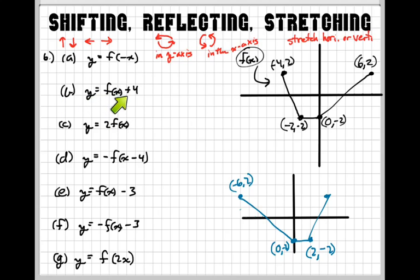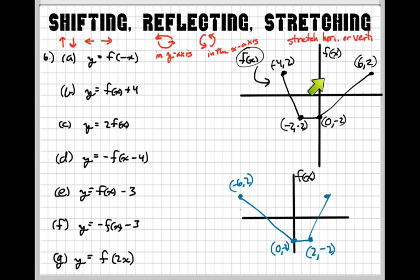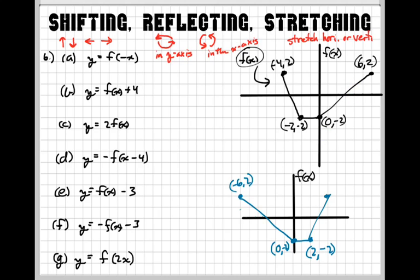Let's get back to this one. If it's adding 4 to the f of x — remember, f of x is like your y — that's going to take this whole function and shift it up. Which coordinates does that change? It's going to change the y. So what you would do to graph this one is add 4 to each of these y values.